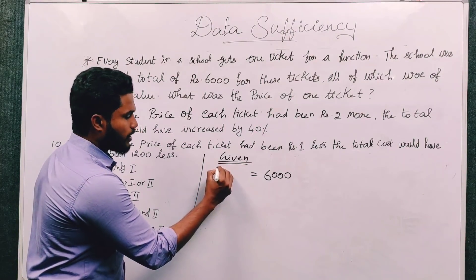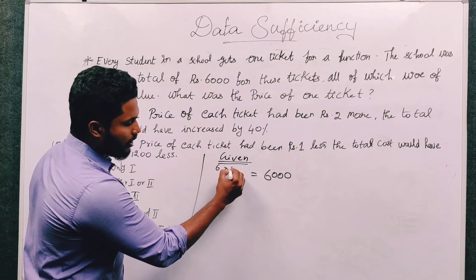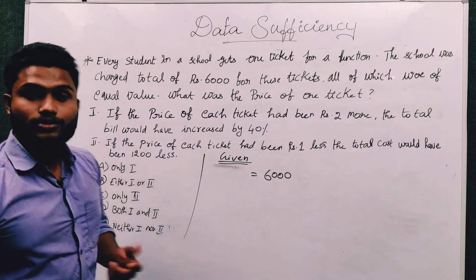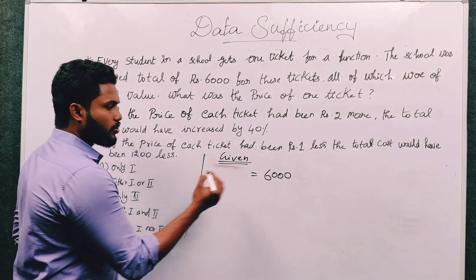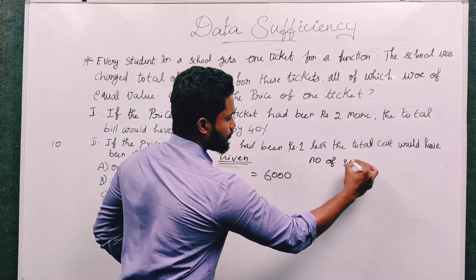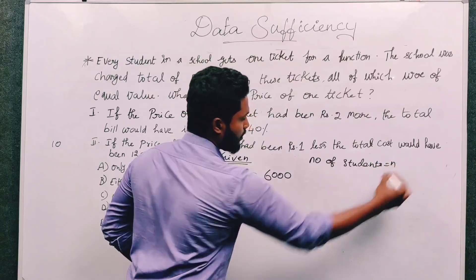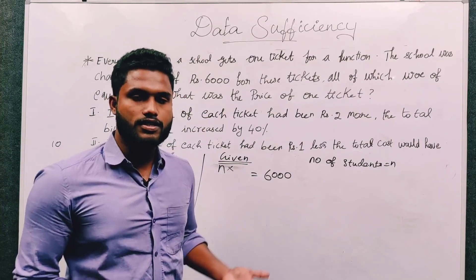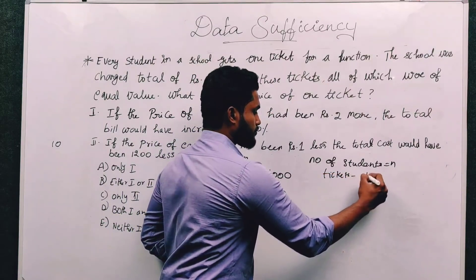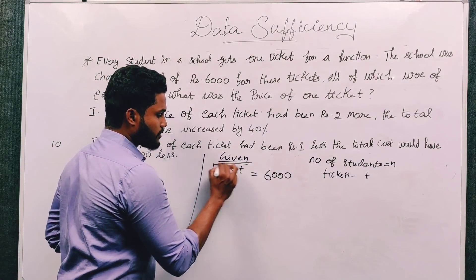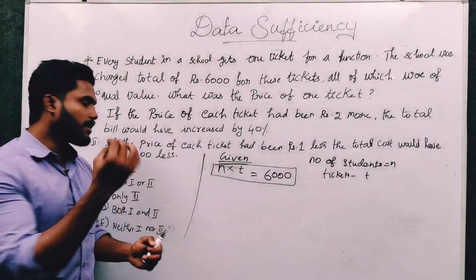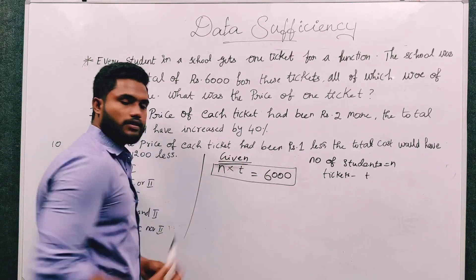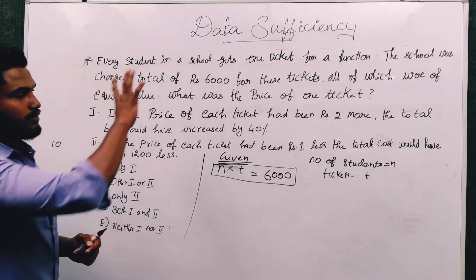The information given is: total ticket value is Rs. 6,000. We don't know how many students there are, how many tickets, or the value per ticket. So let N = number of students and T = price per ticket. Since each student gets one ticket, N × T = 6,000. That is our base equation.